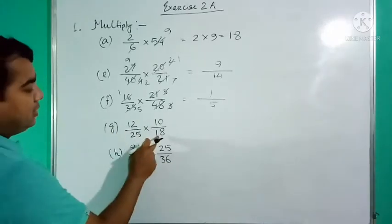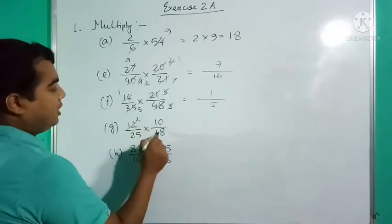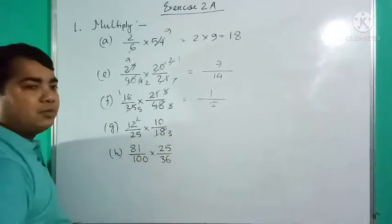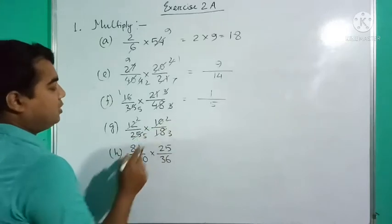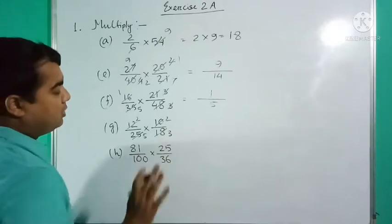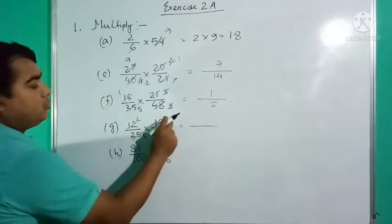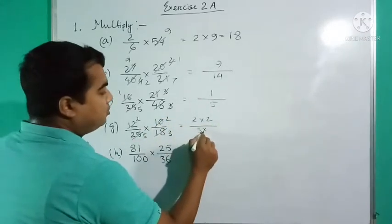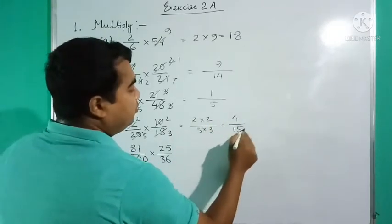Question number 1g: Cancel 12 and 18 — 6 goes into 12 twice and into 18 three times. Also 10 and 25 — both divisible by 5, giving 2 and 5. No more cancellation. Multiply numerator × numerator: 2 × 2 = 4; denominator × denominator: 5 × 3 = 15. Answer is 4/15.